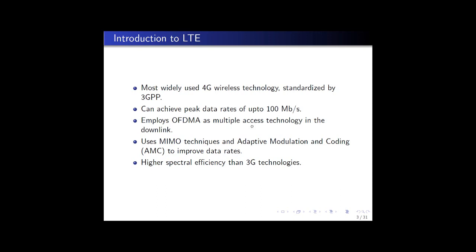Long-term evolution or LTE is the most widely used 4th generation wireless technology. Looking at the evolution of wireless technologies over the years, there have always been two competing technologies in each generation. In second generation there was GSM and CDMA; in third generation there was WCDMA and CDMA 2000. LTE is being viewed as the single 4th generation technology to which the competing standardization bodies want to converge, and it is being deployed in various parts of the world rapidly.